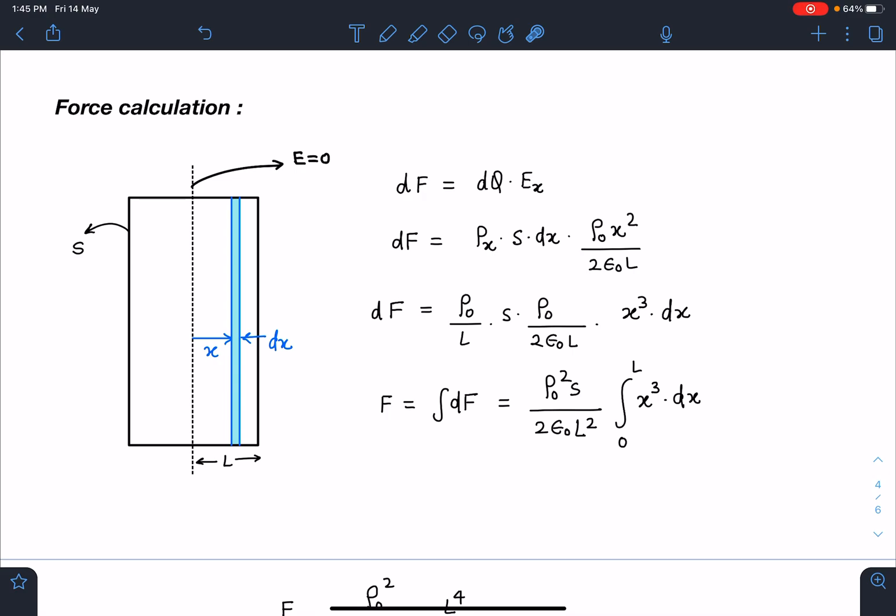I can write this dq charge as ρ_x·S·dx, and the field value inside this slab is ρ_0 x²/(2ε_0 L). When I substitute the value of ρ_x and calculate the total force, it gives me (ρ_0² S)/(2ε_0 L²).